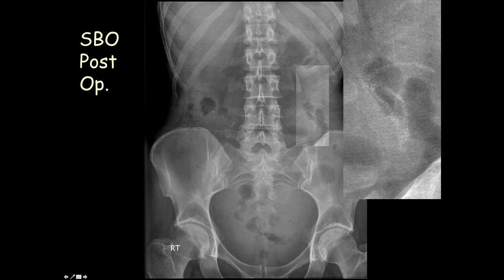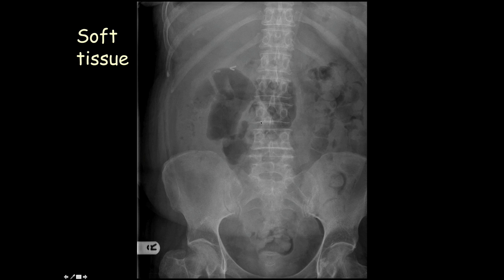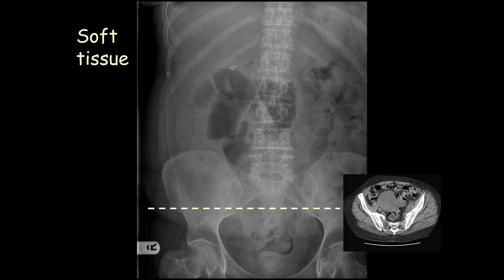This is another patient. Remembering our ABC again, there are a couple of clips in the right upper quadrant from a previous cholecystectomy. Looking at the soft tissues, nothing abnormal is spotted, and the bowel gas pattern looks normal as well. This again demonstrates the limitation of the plain film. Clinically, a mass could be felt in the right iliac fossa. The patient went on to have a CT scan — an ultrasound could also have demonstrated this pathology. CT shows a complex cystic lesion in the right ovary within the pelvis, which is difficult to see on the plain film because it's all about different densities.